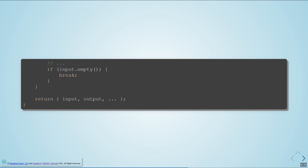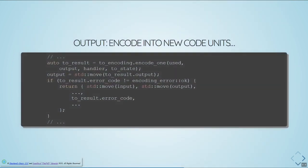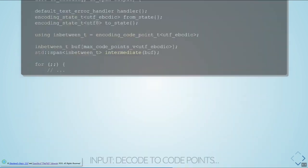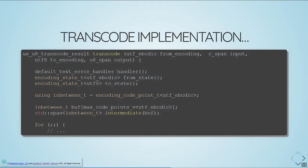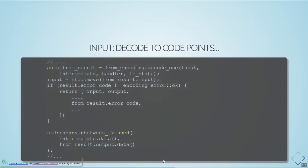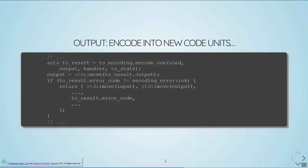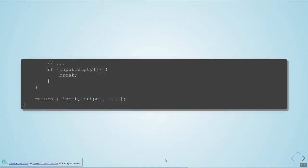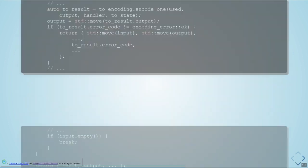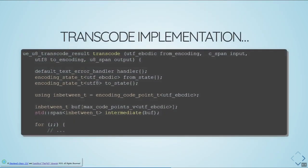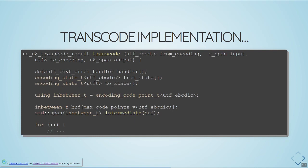That's it. That is literally all you need to do transcoding — implemented by calling the defined functions on the encoding object. And if you just replace the hard-coding of UTF-EBCDIC and UTF-8, you can do this between any two encodings as long as the code point types are common. That is what I've just proven is possible with this API.